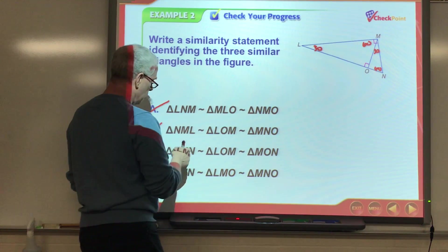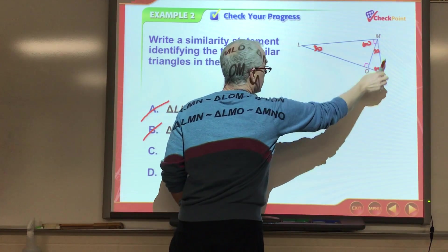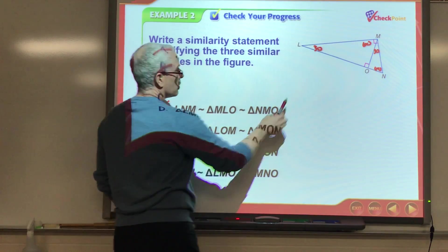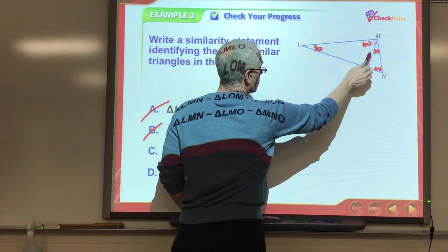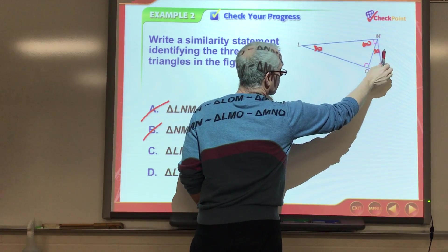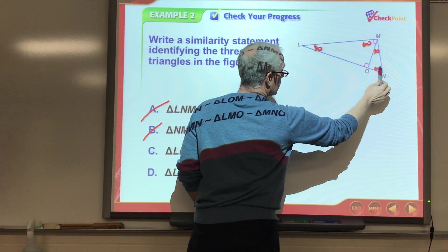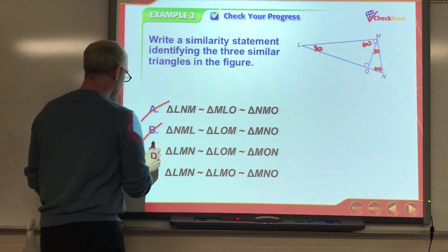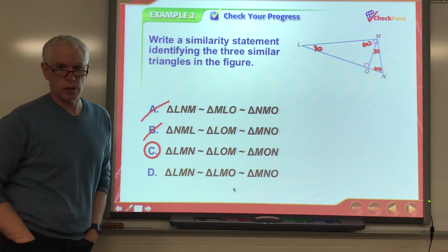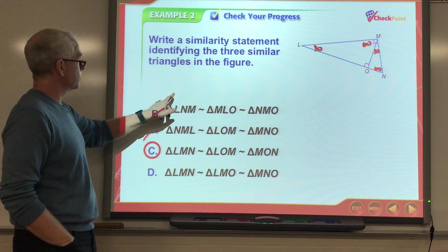LMN, so, for both of these, they're LMN. That's going to be 30, 90, 60. Okay, LOM, 30, 90, 60. I like that. MON, 30, 90, 60. I'm liking that result right there. Okay. So, I'm just comparing those angles to make sure that the corresponding parts match up, you guys. Okay. All right.